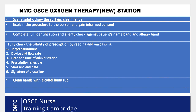Check the MRN number from the name band and match it to your documentation. Then check the allergy status — look at the allergy band and verify that the allergies are correctly documented in your prescription chart.